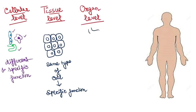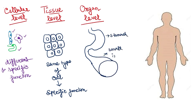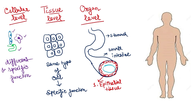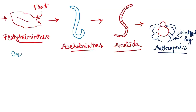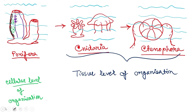The next level is the organ level. In this case, tissues form an organ. For example, the stomach is an organ, and the small intestine is another organ. If we zoom into the small intestine, we can see the outer layer is the epithelial tissue, the next layer is the muscular tissue, and the third type is the connective tissue. So here, three tissues are contributing to the formation of one organ. This organ level is found in Platyhelminthes.